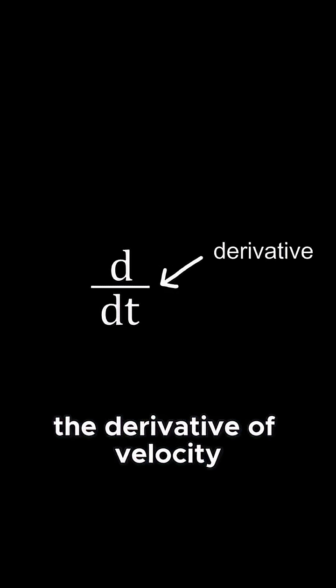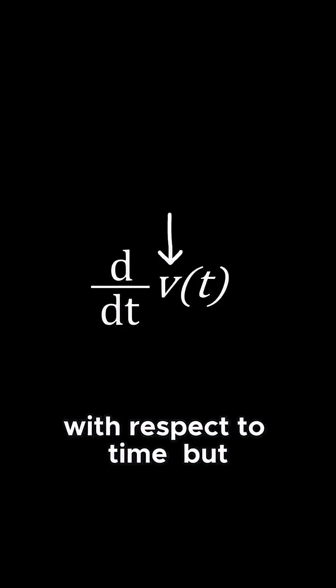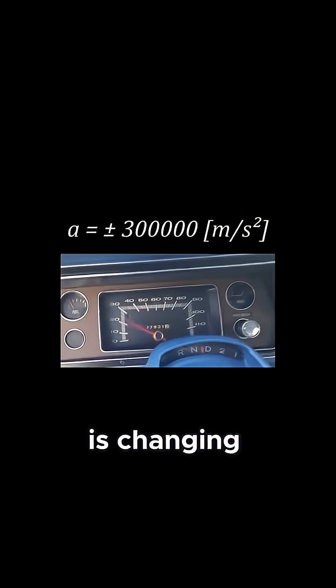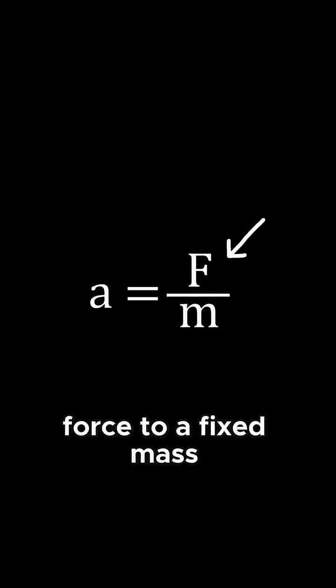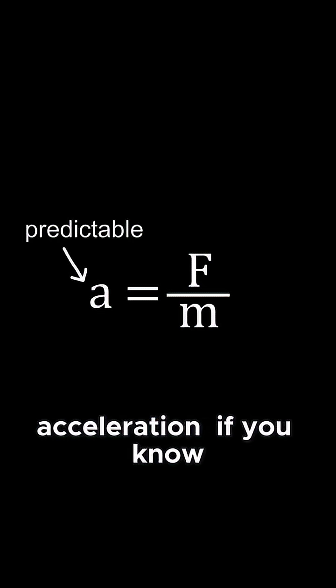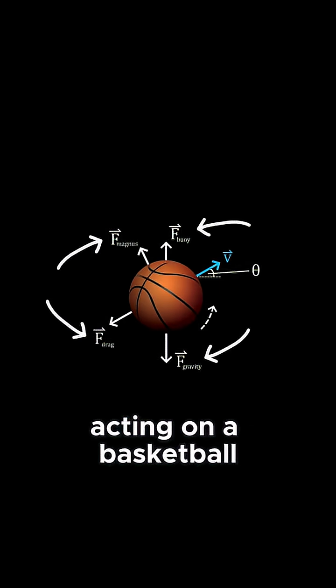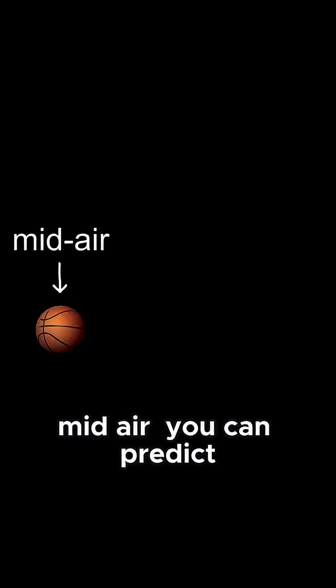And acceleration is the derivative of velocity with respect to time, but that's too many big words for my taste, so let's just say it's how fast your velocity is changing. The key takeaway is that if you apply force to a fixed mass, you get a predictable amount of acceleration. If you know all the forces acting on a basketball midair, you can predict with 100% certainty if the ball will go in the hoop or your neighbor's windshield.